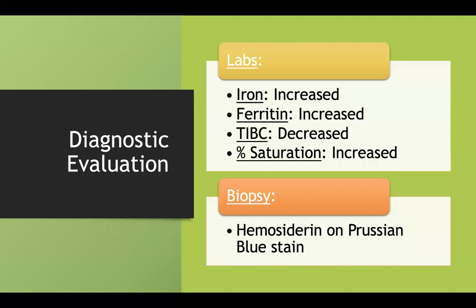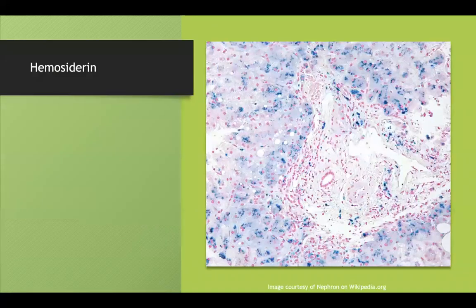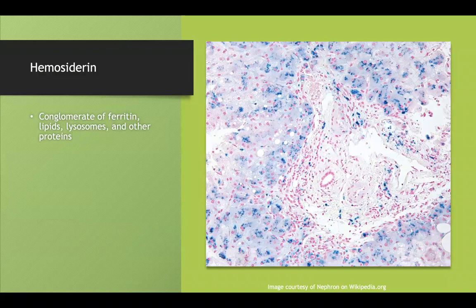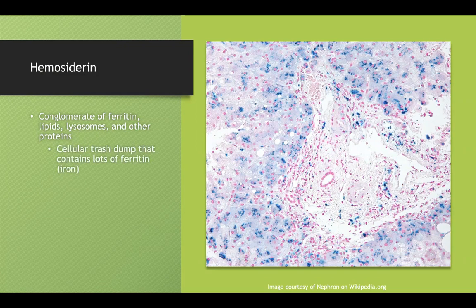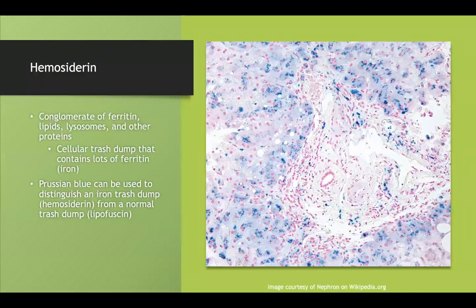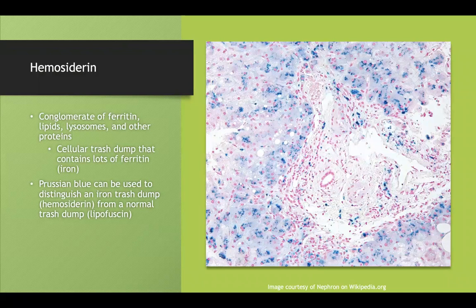On biopsy, this will show hemosiderin on a Prussian blue stain. Hemosiderin is a conglomerate that has ferritin, lipids, lysosomes, and other proteins. It's basically a cellular trash dump. In this case, it contains lots of ferritin. Your body essentially doesn't have anywhere else to put this ferritin, so it tries to store it in this form.